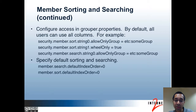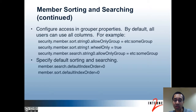When performing queries on Grouper API methods that support this, if a particular sort or search index is not specified, then the default is used. You can configure the default ones to use in the grouper.properties file as well. Note that both of these values can be comma-separated with multiple index values. The reason for that is if the user doesn't have access to the first one, then the second one would be tried, and so forth.